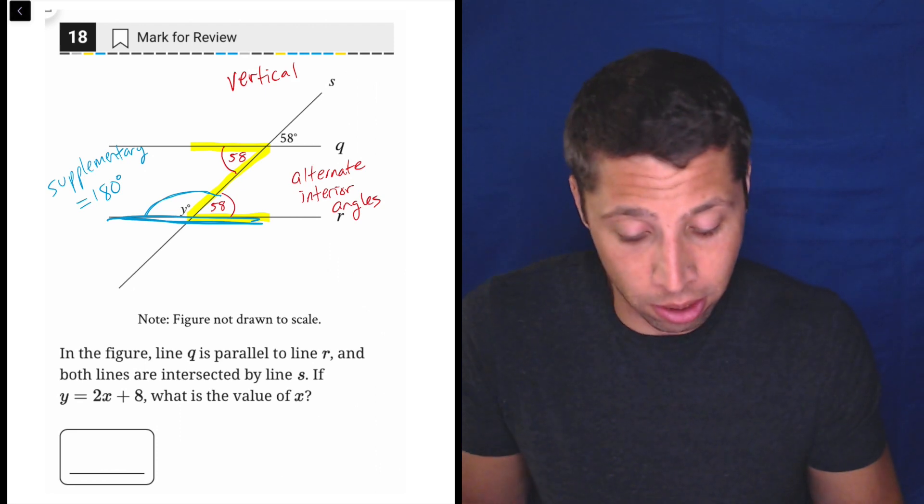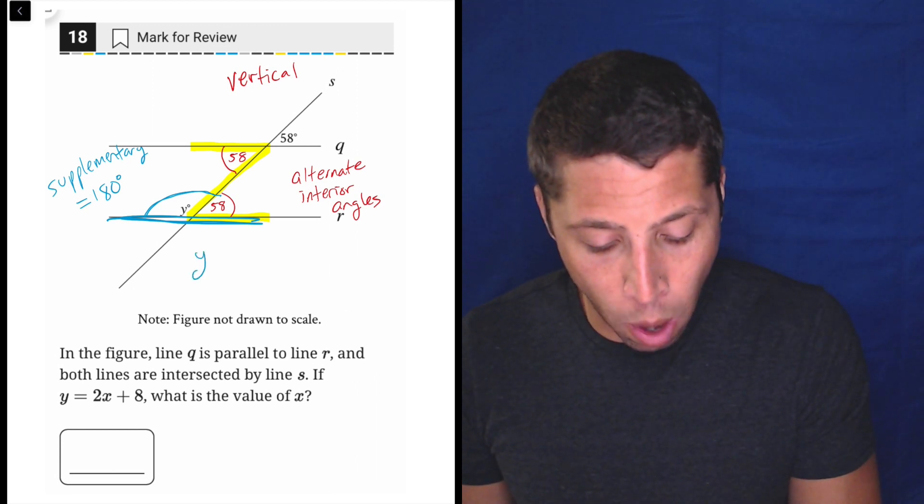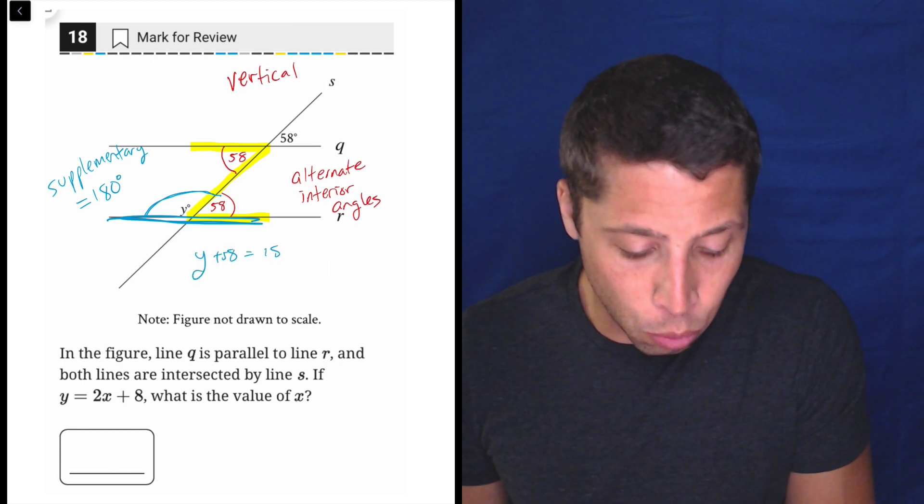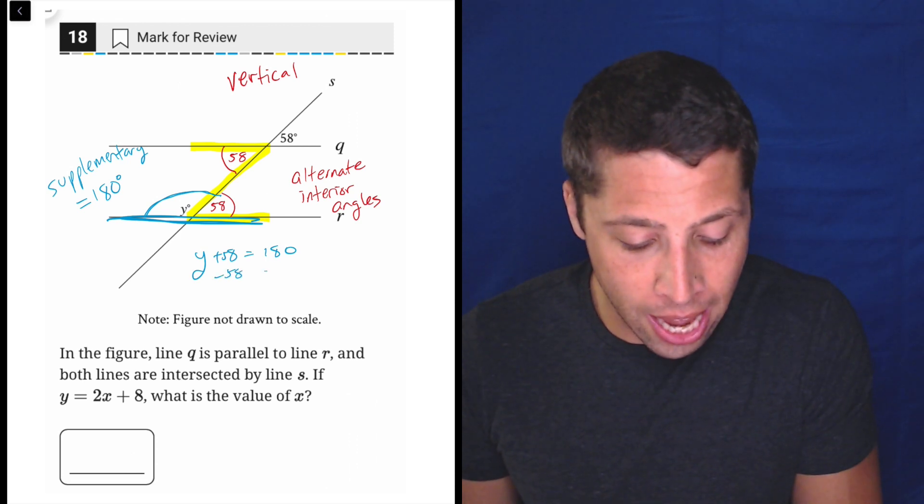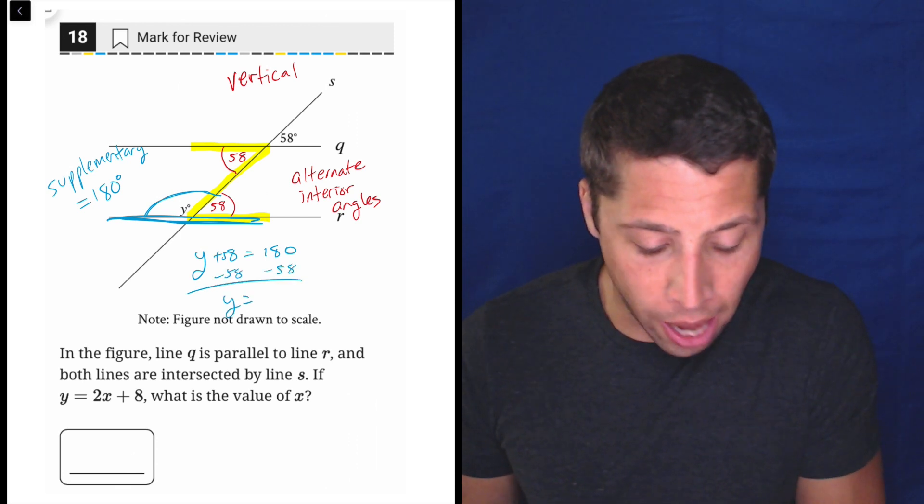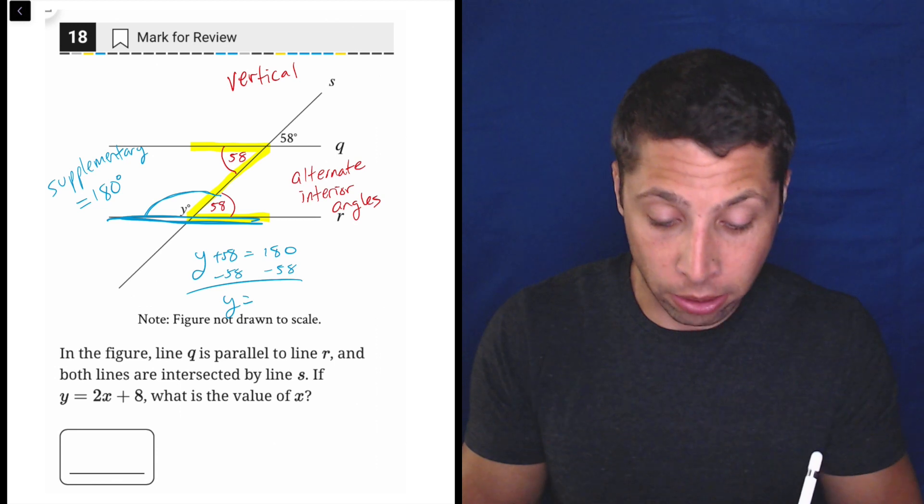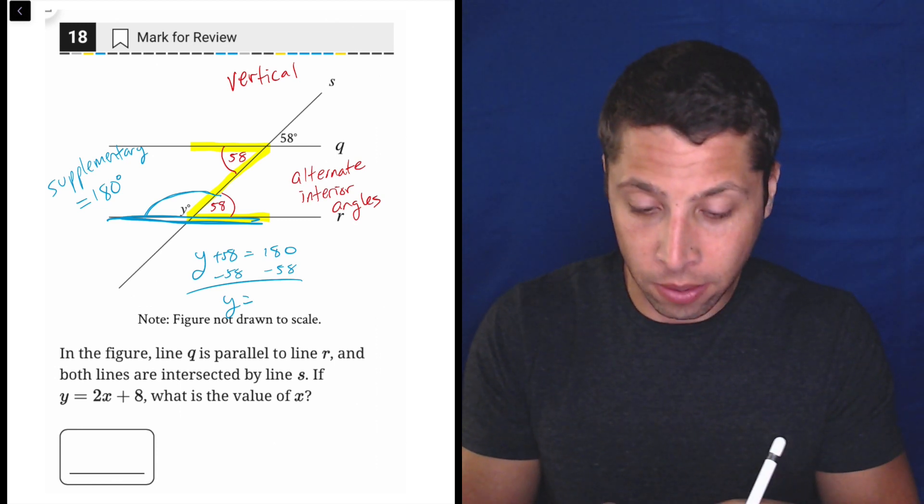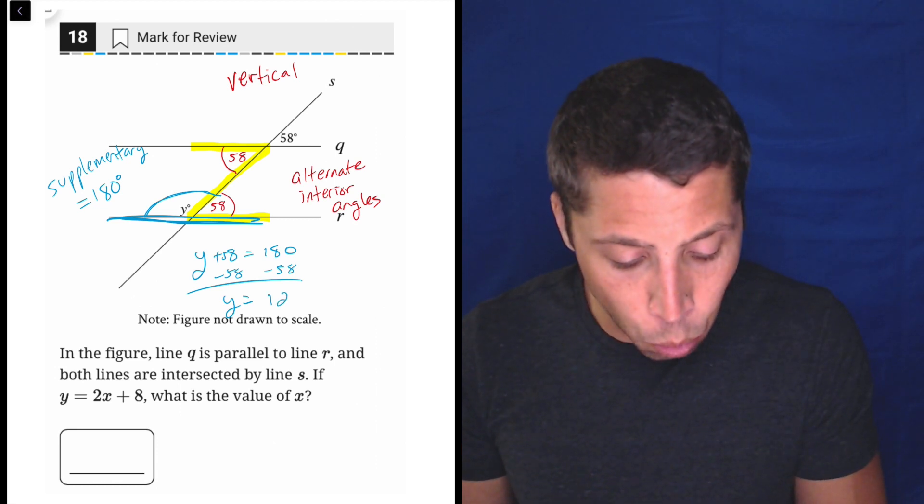So basically I would just make a little bit of an equation. Y plus 58 is equal to 180. 180 subtract the 58 and we're going to get y is equal to, I'm going to use my calculator here. 180 minus 58. Y is equal to 122.